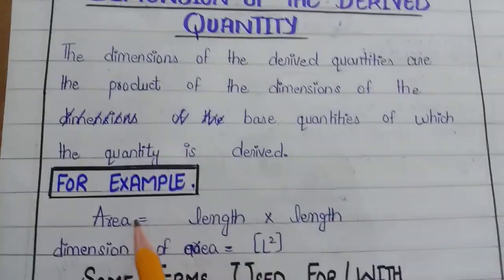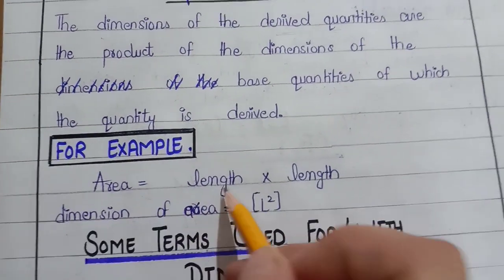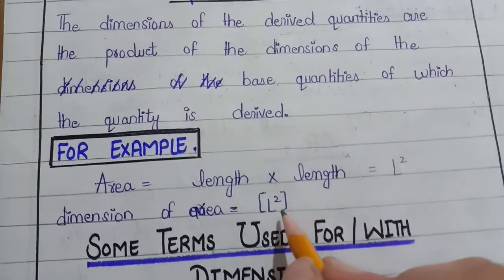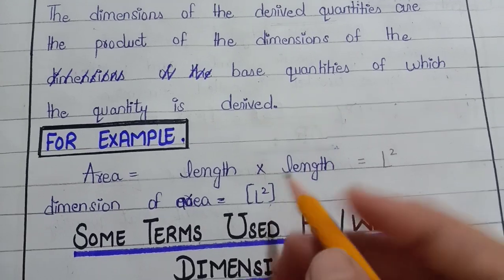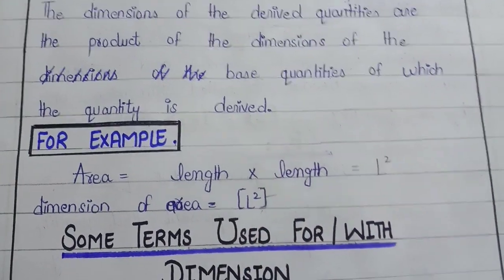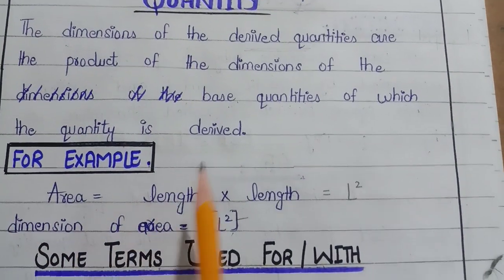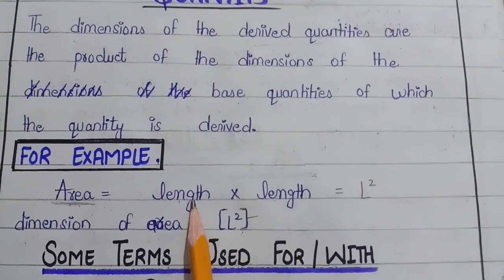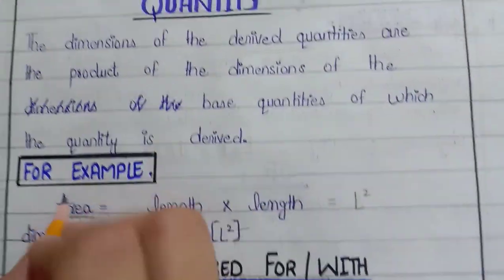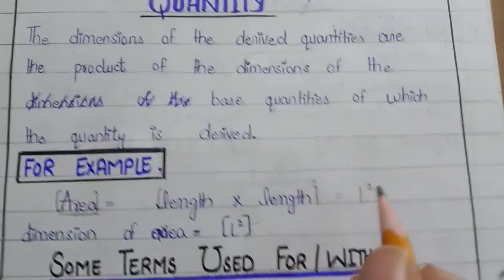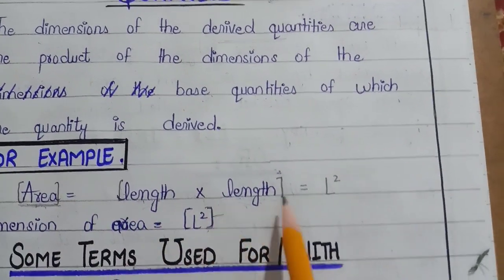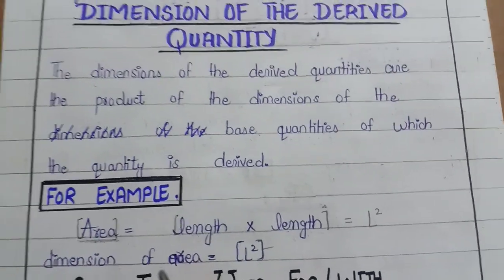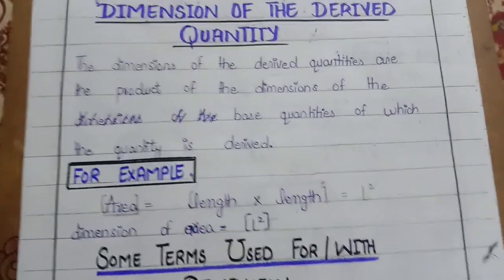For example, to find the dimension of area: area equals length multiplied by length, which equals L squared. So if we write its dimensions, we get [L²] in square brackets. This confirms that the dimensions of a derived quantity are the product of the dimensions of the base quantities used to derive it.